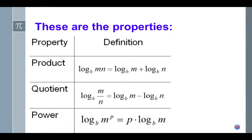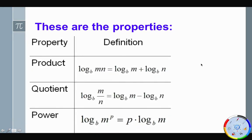So these are the three properties: the product rule, the quotient rule — or rather property — and the power property. The product property says that if I have the log with any base of a product of two things, I can write it as the sum of two logarithms. For example, the log base four of four x can be written as log base four of four plus the log base four of x.